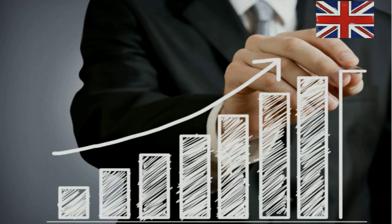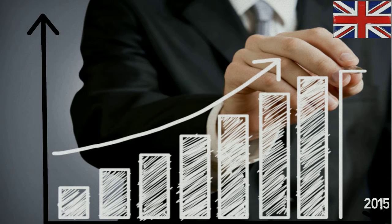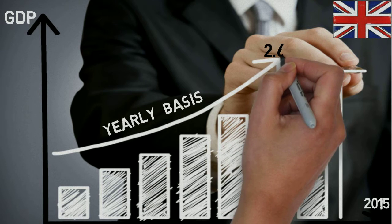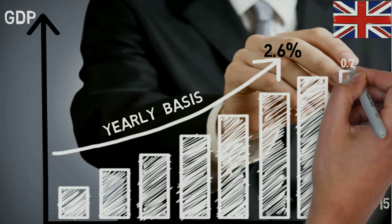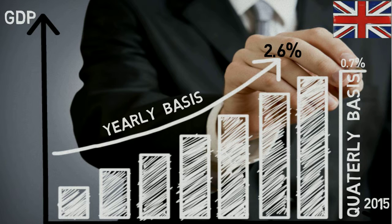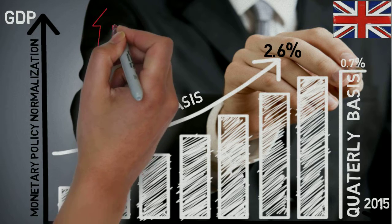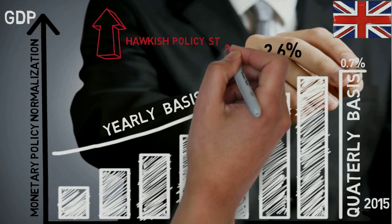Let's consider an example about the UK economy. In mid-2015, the UK economy returned to a level of health that was last seen before the sub-prime crisis. The second quarter GDP report from the UK met expectations of robust growth. On a yearly basis, the economy grew 2.6%, while on a quarterly basis it expanded 0.7%. This comparatively robust economic performance drew policy makers' attention to monetary policy normalization, which was considered a hawkish policy stance.